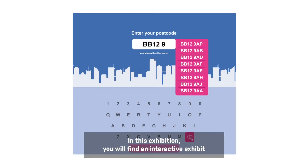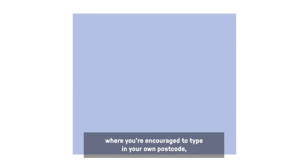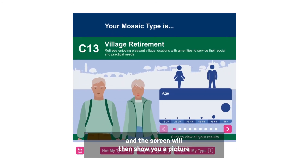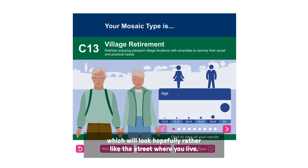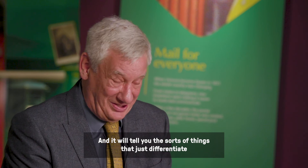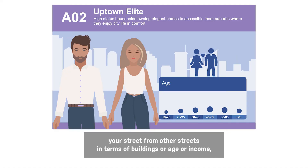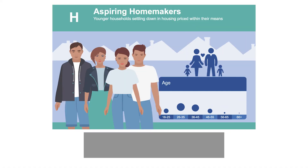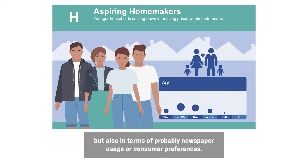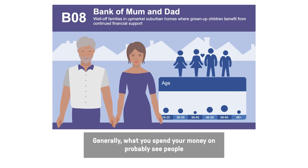In this exhibition you will find an interactive exhibit where you're encouraged to type in your own postcode, and the screen will then show you a picture which will hopefully look rather like the street where you live. It will tell you the sorts of things that differentiate your street from other streets — in terms of buildings, age, or income — but also in terms of newspaper usage or consumer preferences generally and what you spend your money on.